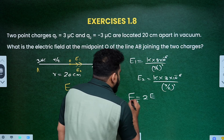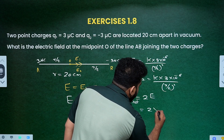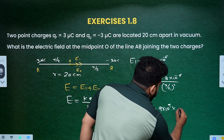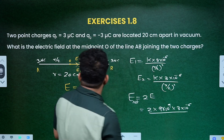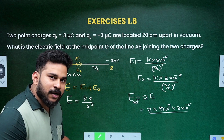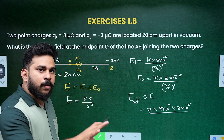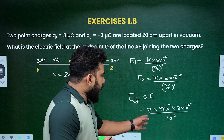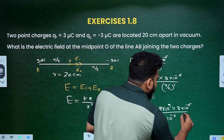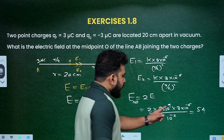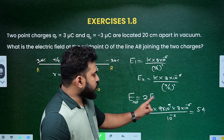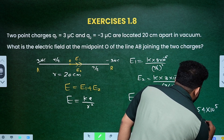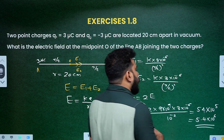E net is equal to 2 times E. The value: 2 times K, where K is 9 into 10 raise to 9, charge is 3 into 10 raise to minus 6, divided by R by 2 which is 10 centimeter, that is 10 into 10 raise to minus 2. So 9 into 3 is 27, 27 into 2 is 54. So we get 5.4 into 10 raise to 6 volt per meter or newton per coulomb.